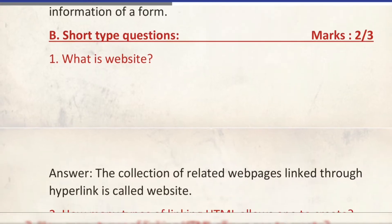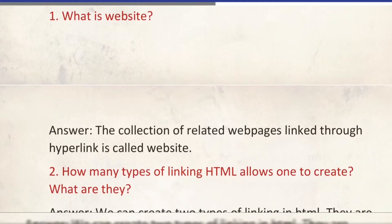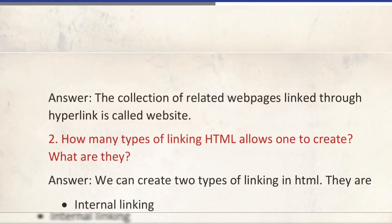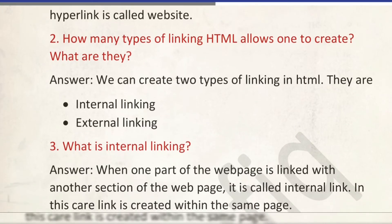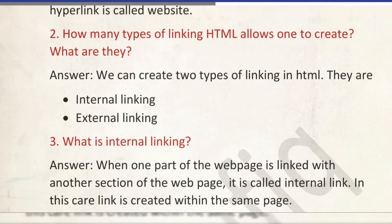Now 2–3 mark answers. What is a website? It is a collection of related web pages linked through hyperlinks. Number 2: how many types of linking does HTML allow? In the book there are just 2 types given, but in some other books it's 3 — internal, local, and global. But here only internal and external are given, so write these 2 only.